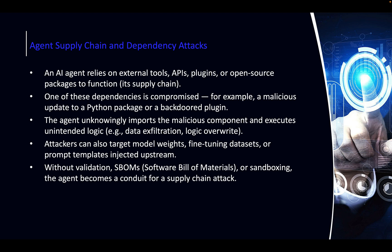Supply Chain and Dependency Attacks: this also exists for normal LLMs, but it basically means when anything in the ecosystem is poisoned — for example, a malicious Python package that the agent requires as a dependency, or a backdoor. This would allow an attacker to massively compromise AI agents across the board. If many agents import a specific package and someone sneaks a malicious Python package onto GitHub, that's a big problem. You need to check your dependencies, third parties, software sources, and DevOps pipeline carefully.